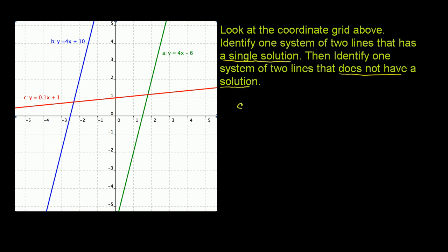So a single solution. They say identify one system, but we can see here there are actually going to be two systems that have a single solution. When we talk about a single solution, we're talking about a single x and y value that will satisfy both equations in the system.